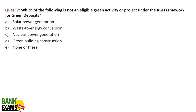Which of the following is not an eligible green activity or project under the RBI framework for green deposits? Nuclear power generation is not a green activity. Commercial banks and NBFCs will raise funds via green deposits and give loans for green activities like solar power generation, waste-to-energy conversion, green building construction, and wind energy — but not nuclear power generation.